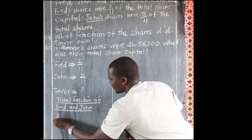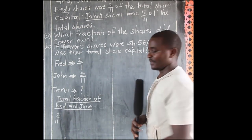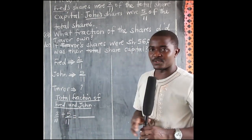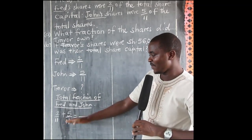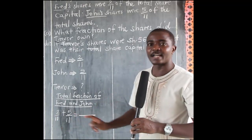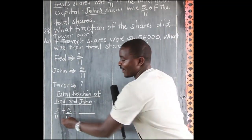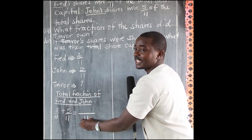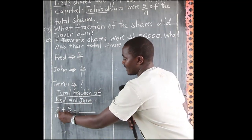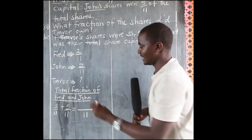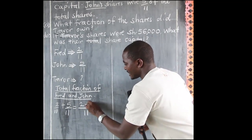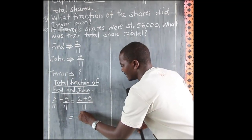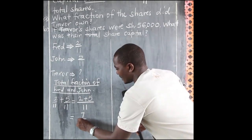We get 2 out of 11 plus 5 out of 11. When adding fractions, we are lucky the denominators are the same. So our LCM is 11. Since denominators are the same, we simply add the numerators: 2 plus 5. What is 2 plus 5? This is 7 out of 11.